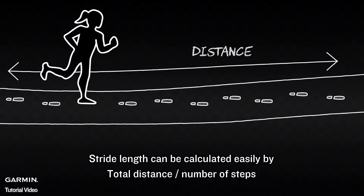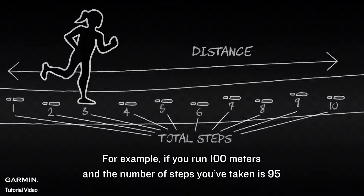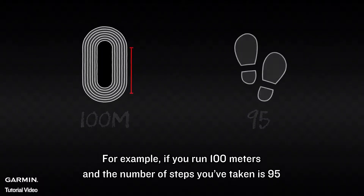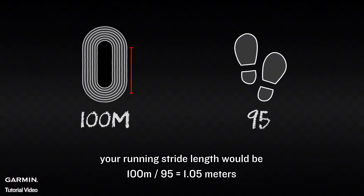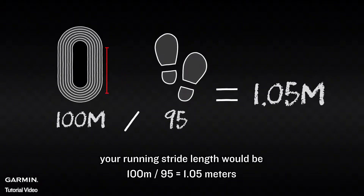Stride length can be calculated easily by total distance divided by number of steps. For example, if you run 100 meters and the number of steps you've taken is 95, your running stride length would be 100 meters divided by 95, which equals 1.05 meters.